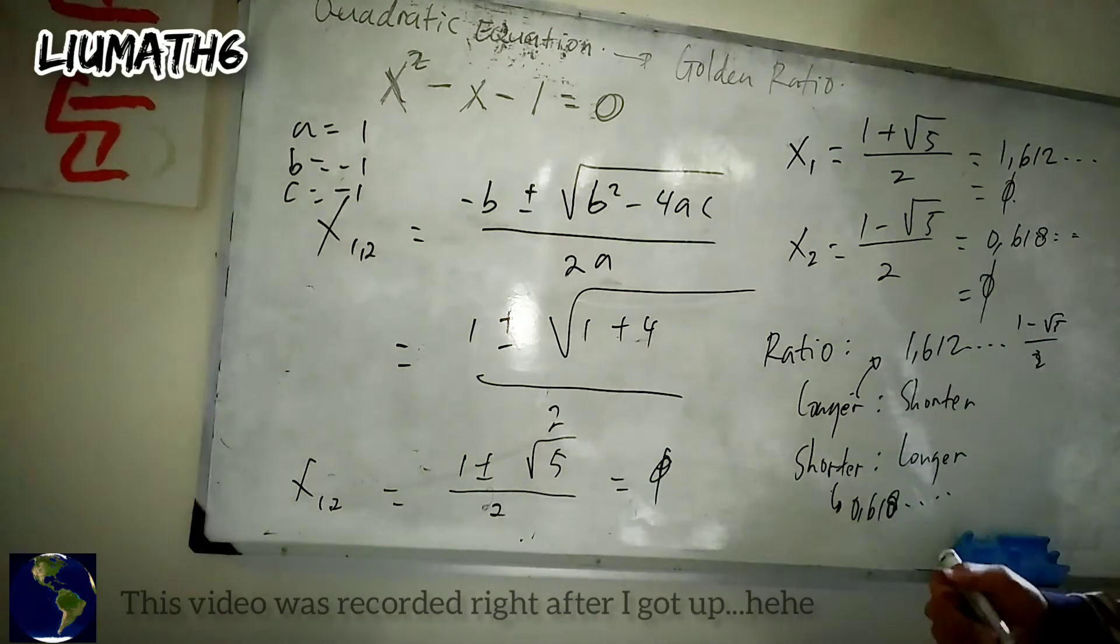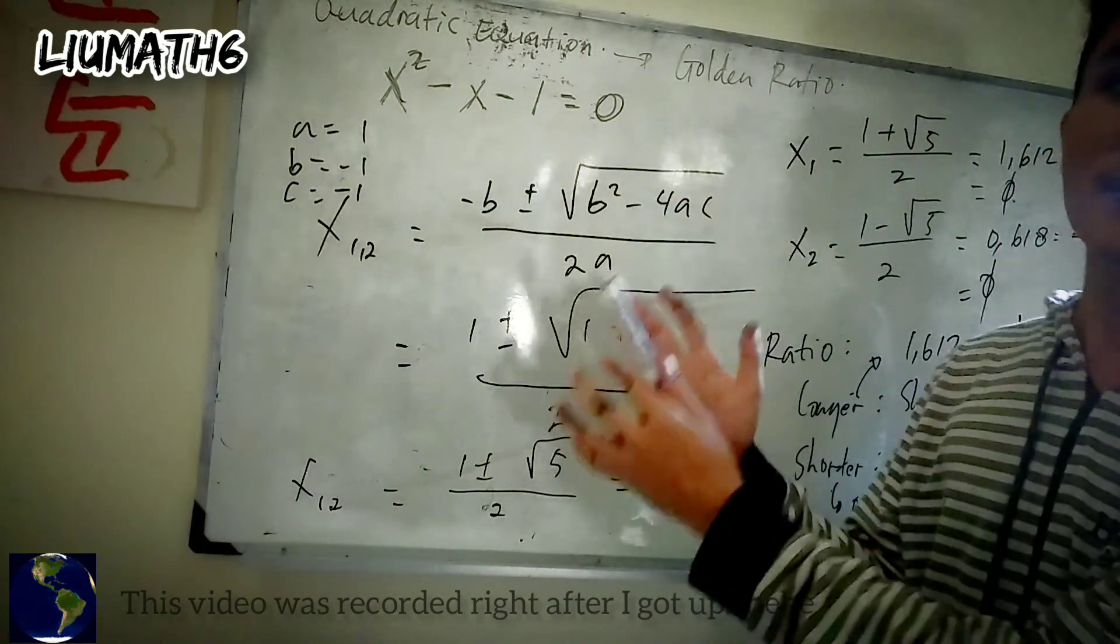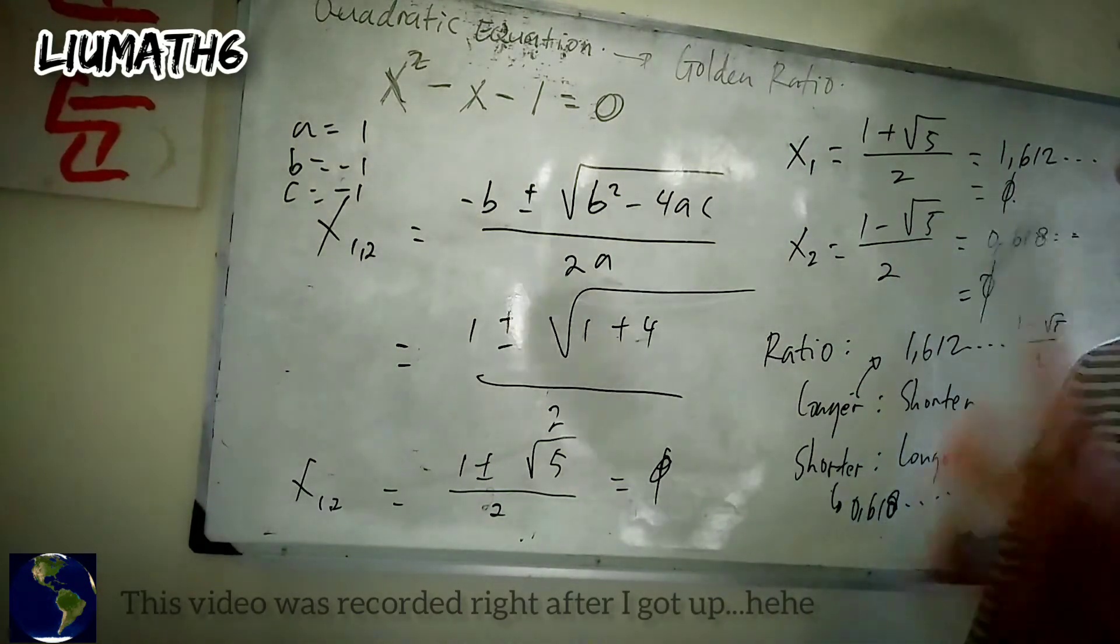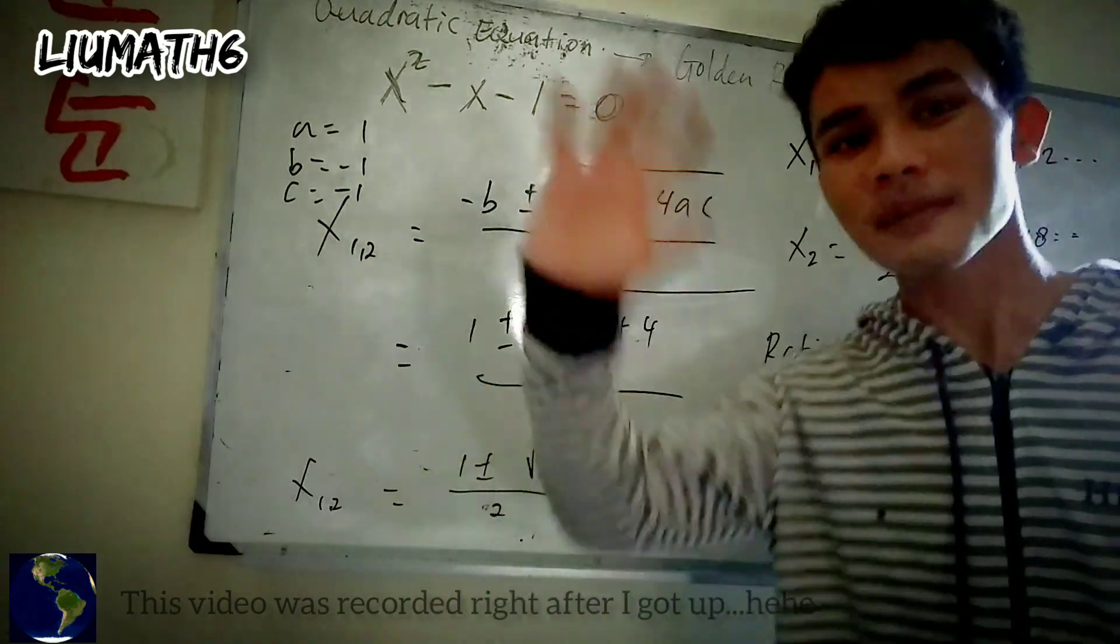Yep, and now it's been shown that we can get golden ratio from a quadratic equation. Thank you very much for watching, and I think you understand. Okay, so see you next video. Bye bye!